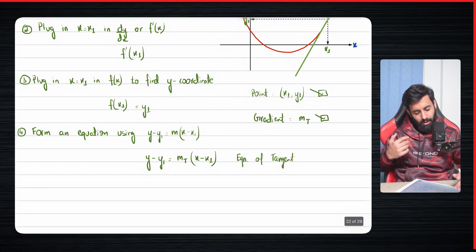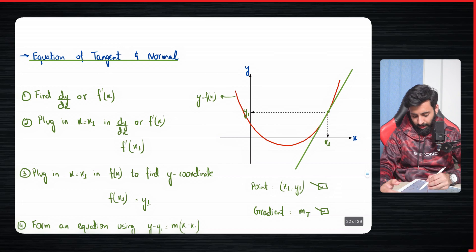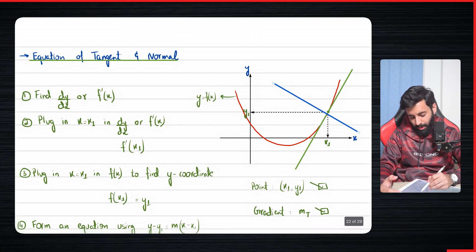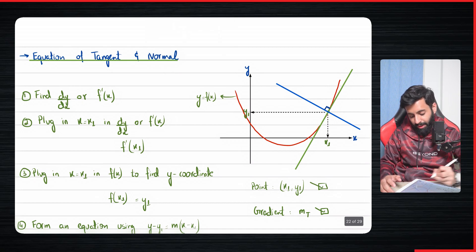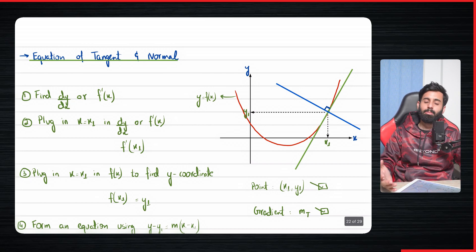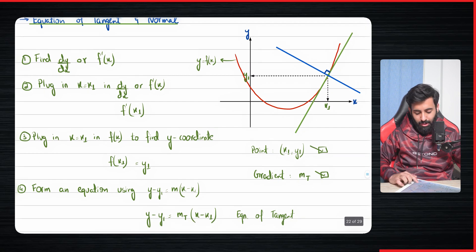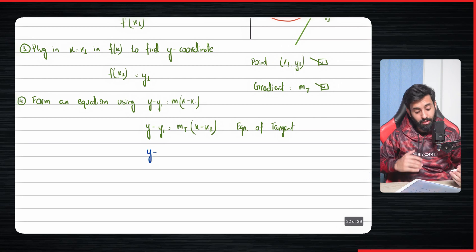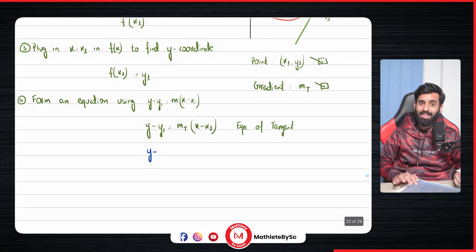Now, what exactly is the normal? A normal line is a line that cuts the tangent line but is perpendicular to it. So the angle formed between the tangent line and the normal line is 90 degrees. To find the equation of the normal, you again need a gradient and a point — the point is the same, but the gradient is different.